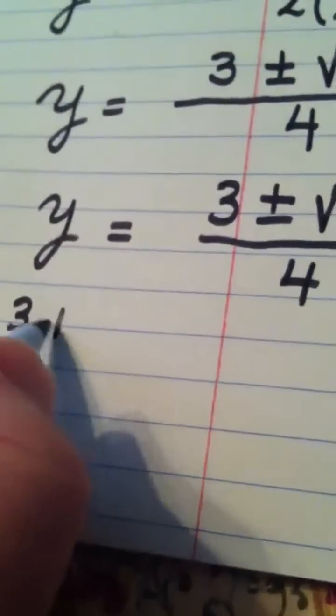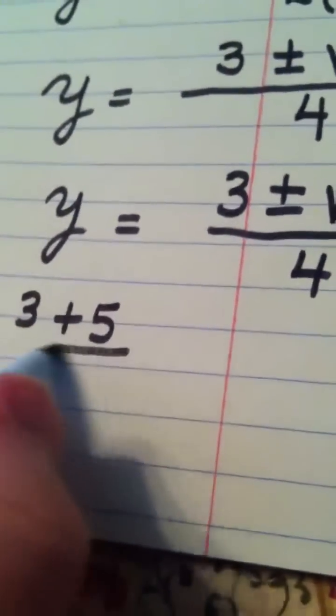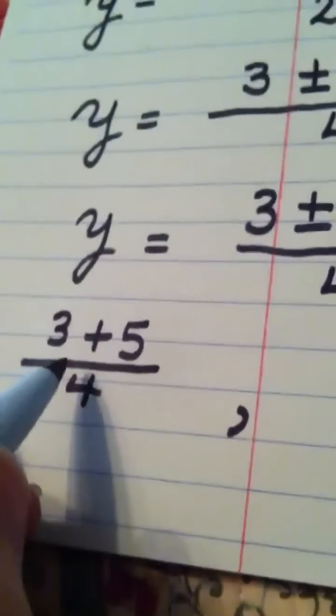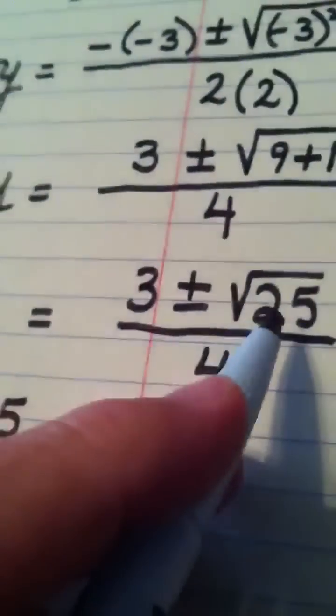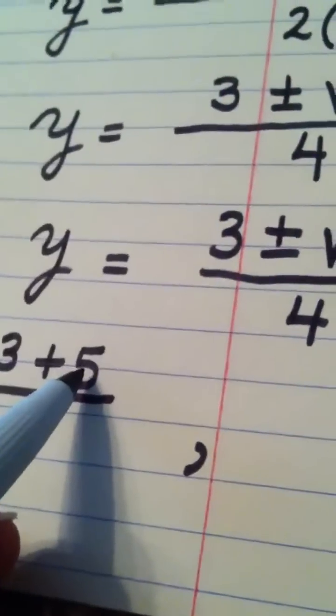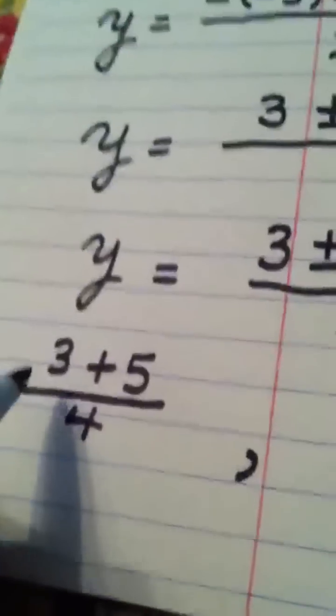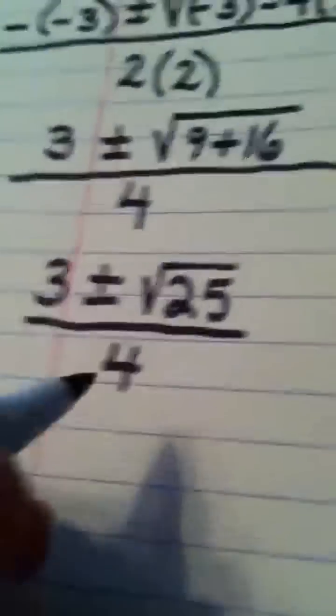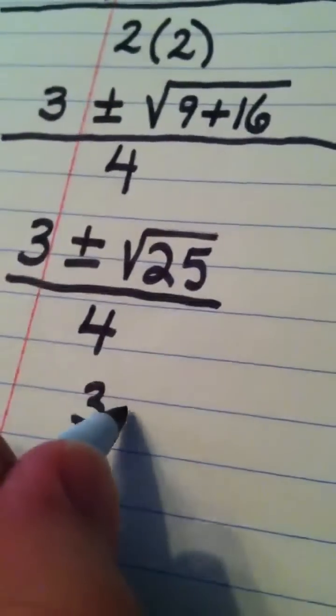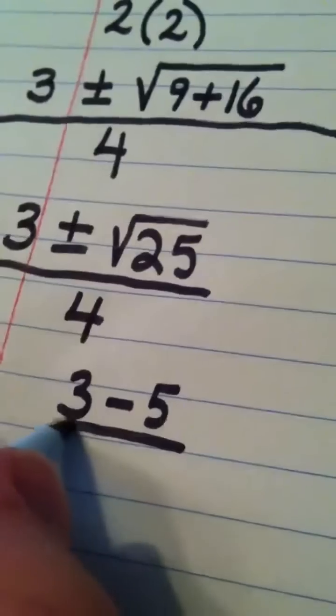So one of my answers is 3 plus 5 over 4. That's one possibility for y. Again, the square root of 25 was 5. If I read it through the plus, that's 3 plus 5 over 4. The other answer is 3 minus 5 over 4.